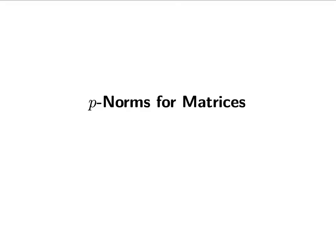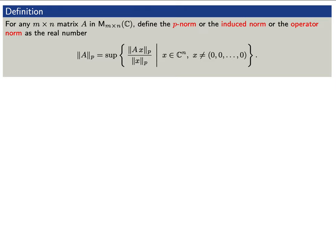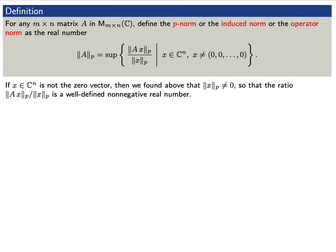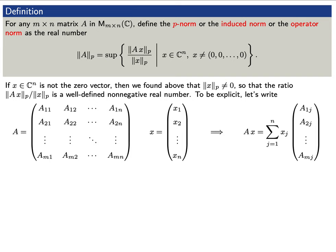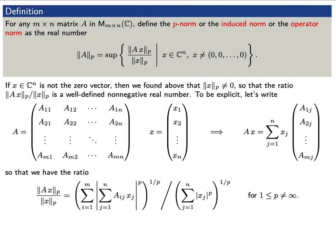Now let's use all of this to define the p-norm of a matrix. Let A be any m by n matrix. We define the p-norm of A as the supremum of the ratio of the p-norm of A times x divided by the p-norm of x, over all vectors x that are not the origin. This is a rather strange definition, so let's try to explain why we make it. If x is not the zero vector, its p-norm is a positive real number, so this ratio is a well-defined non-negative number.